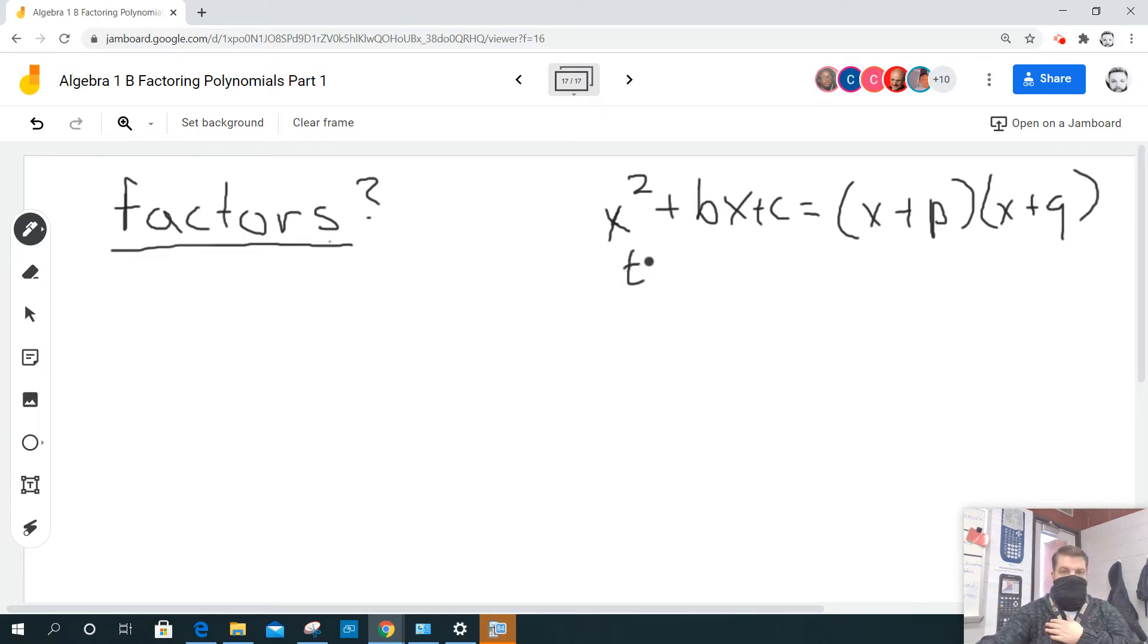So remember, this is a trinomial, trinomial because it has three terms. It's also quadratic because it's a second degree polynomial. It's raised to the second power, right, this little thing right here. Now these are what we call linear because it's x to the first power, and they're called binomial because they have two terms.